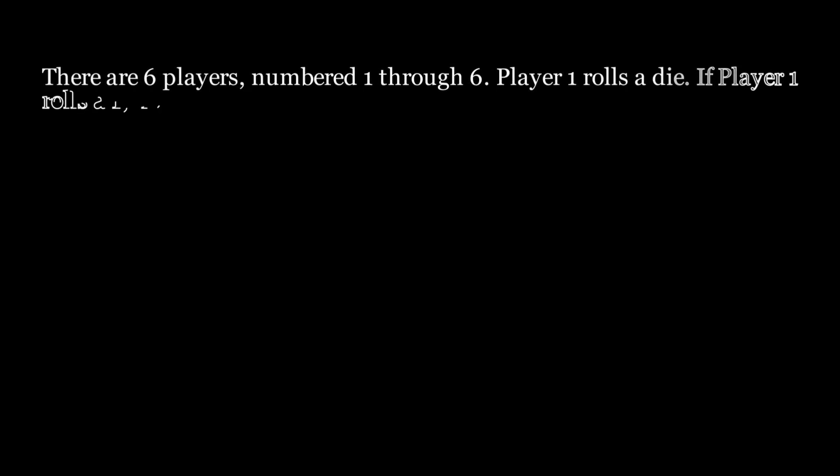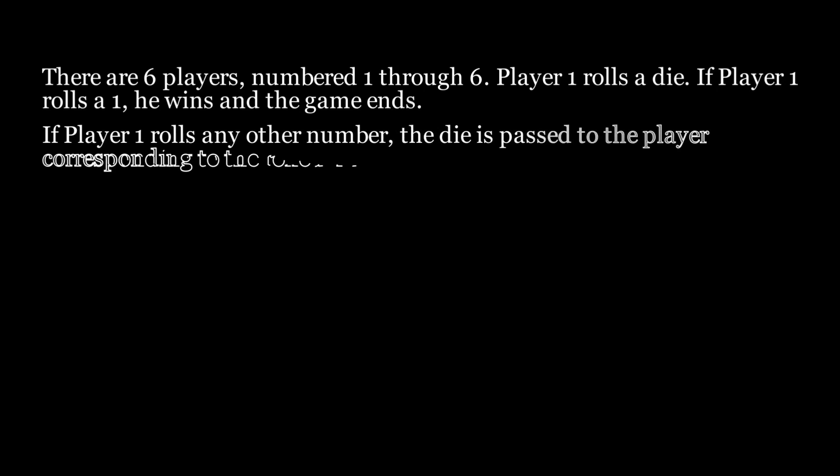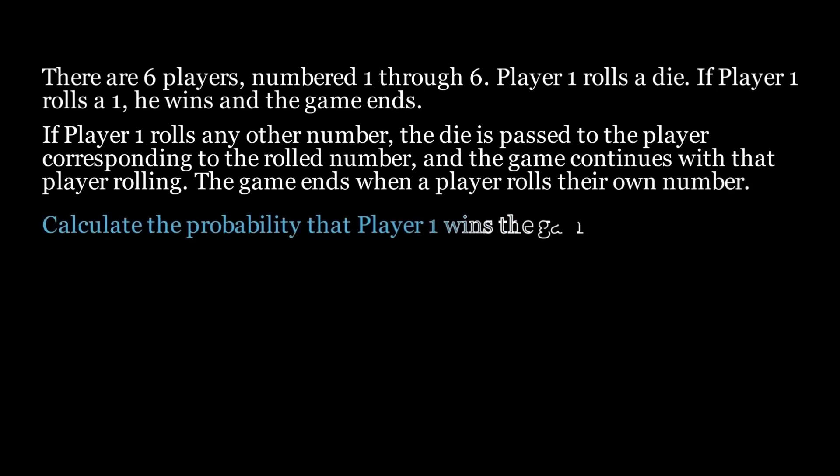Let's look at the problem. There are six players numbered from one through six. Player one rolls a die. If player one rolls a one, he wins and the game ends. If player one rolls any other number, the die is passed to the player corresponding to the rolled number and the game continues with that player rolling. The game ends when a player rolls their own number. Calculate the probability that player one wins the game.